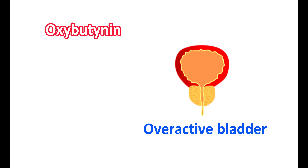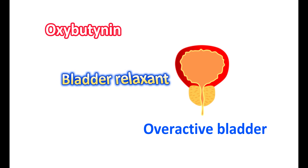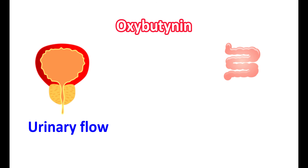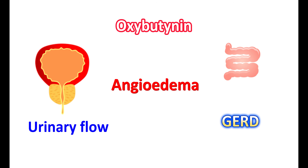Oxybutynin is one of the medications used for the treatment of overactive bladder. It is an anticholinergic medication that acts as a bladder relaxant. However, before using this medication, you should know a few important things: its effect on gastric motility, how it affects urinary flow, what happens if taken in people with GERD, what are its interactions, and how it produces angioedema.